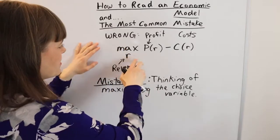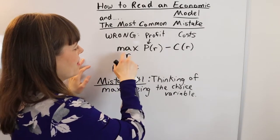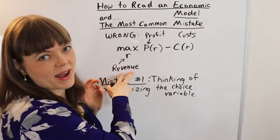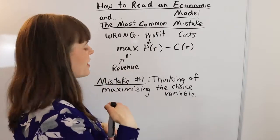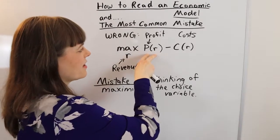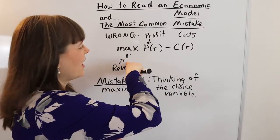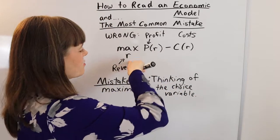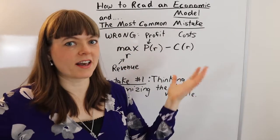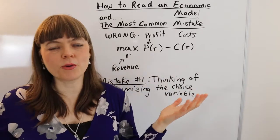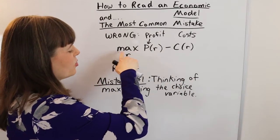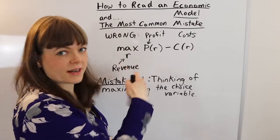The way this appears in student models is they will set up a choice variable by asking what they want to maximize. They might want to maximize revenue, which is the money coming into the firm. But that's not what you're doing — you're maximizing your objective function by choosing the choice variable. Maximizing revenue is super wrong because it's trivially easy: you just set revenue as high as you possibly can. That's not interesting, nor is it realistic. Anytime you want to maximize the choice variable, you know you've set up your model incorrectly.